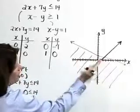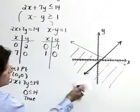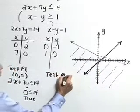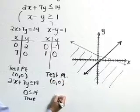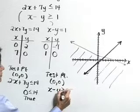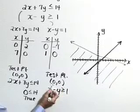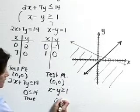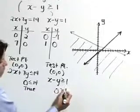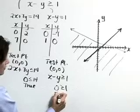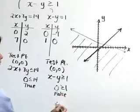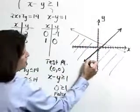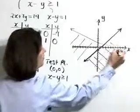Let's determine which side of this boundary line to shade. We can test the origin since it's clearly off the line. Testing the point (0, 0) in the inequality x minus y is greater than or equal to 1: substituting 0 for x and 0 for y gives 0 on the left-hand side. Is 0 greater than or equal to 1? No, that is a false statement. Therefore, the origin is not included in the solution region for our second inequality, which means we shade the other side of that line.